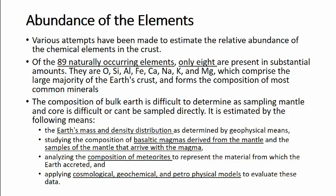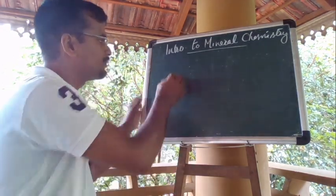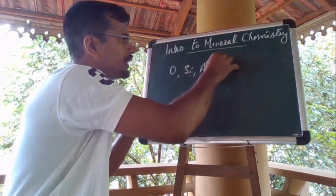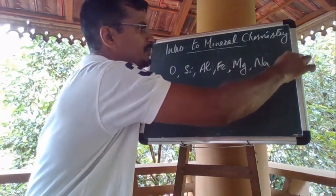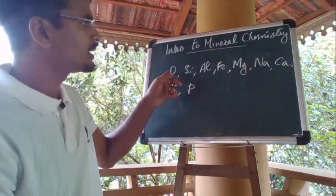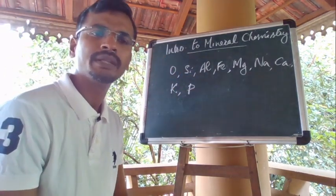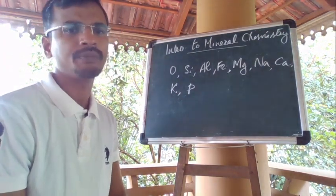There have been a number of attempts to estimate the relative abundance of chemical elements in the crust. There are about 89 naturally occurring elements. Out of those, only 8 are present in substantially high amounts: oxygen, silicon, aluminum, iron, magnesium, sodium, calcium and potassium. These elements comprise the large majority of the earth's crust and form the composition of most common minerals.